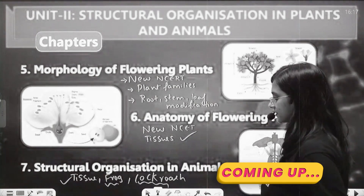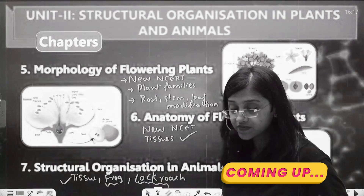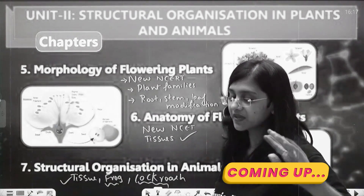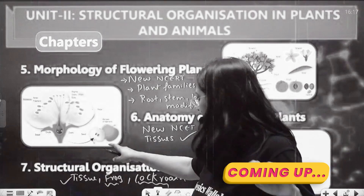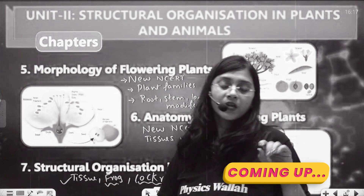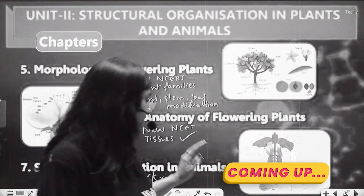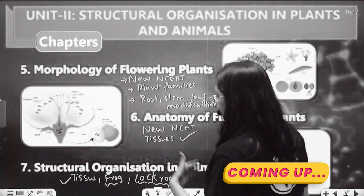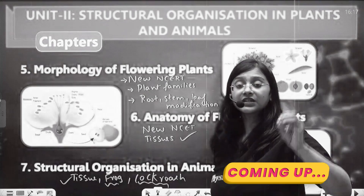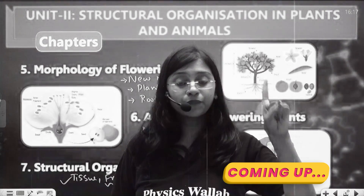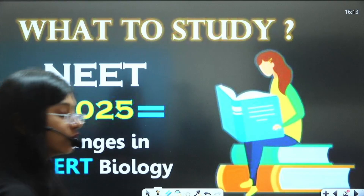In structural organization in animals, you have to study about animal tissues. You can skip earthworm but cover frog and cockroach. When studying frog and cockroach, you will find it difficult, so the suggestion is to understand digestion, excretion, and everything about frog and cockroach by revising life processes from Class 10.